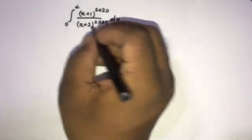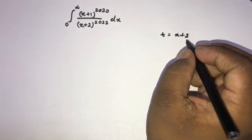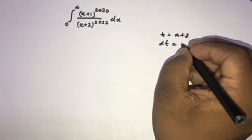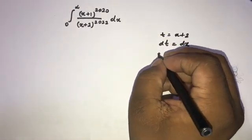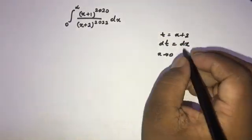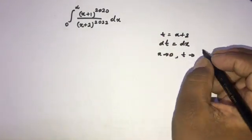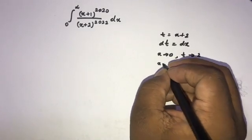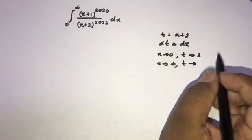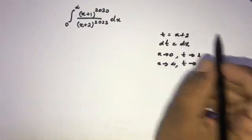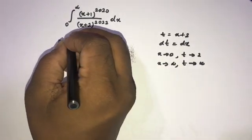Let t = x + 2. Differentiating gives dt = dx. Now for the limits: when x = 0, t approaches 2, and when x approaches infinity, t also approaches infinity.